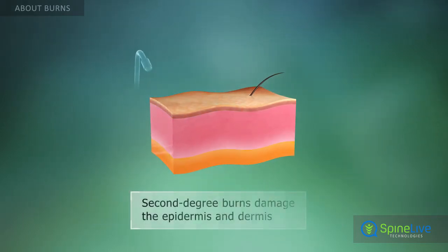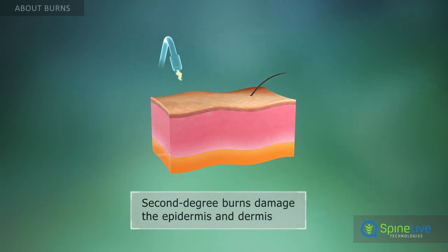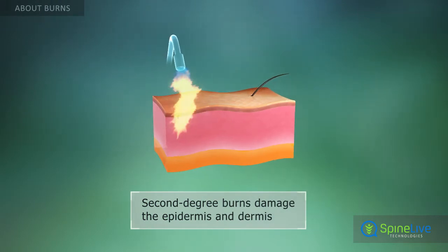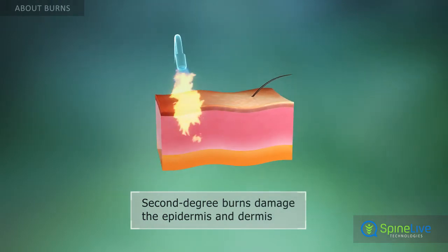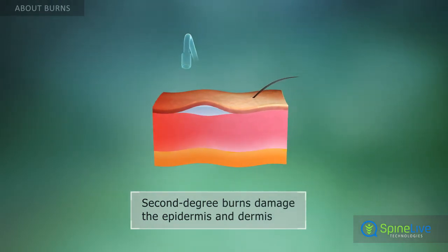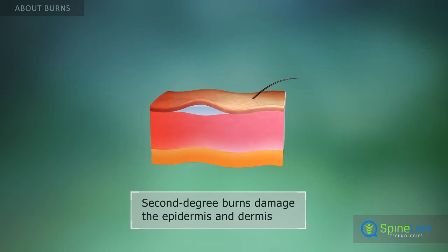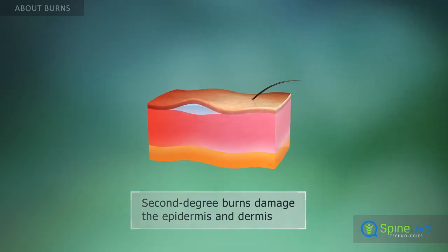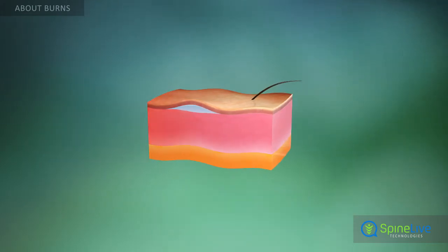Second degree, or partial thickness burns, cause damage to the dermis as well as the epidermis. These burns are characterized by redness and the formation of blisters.